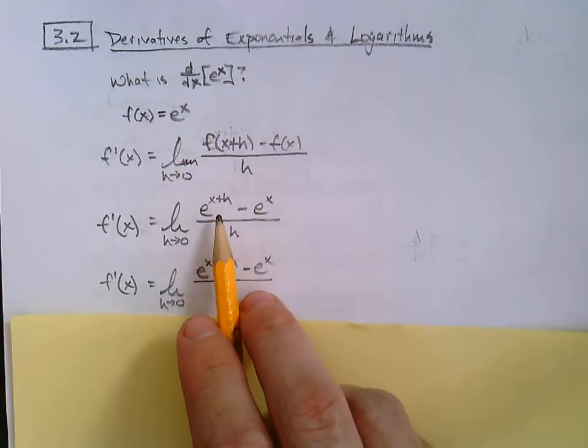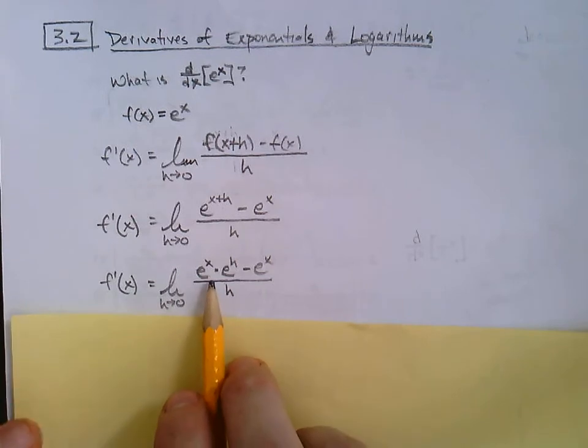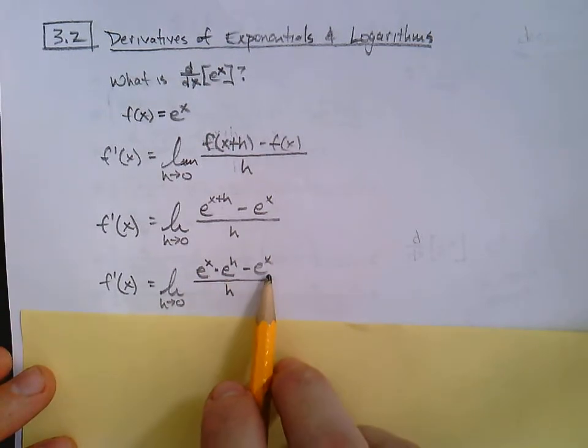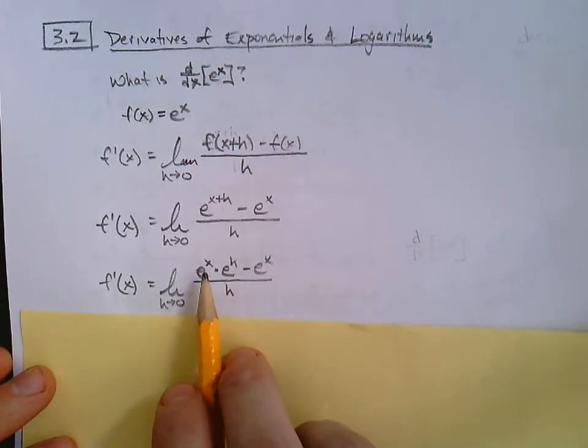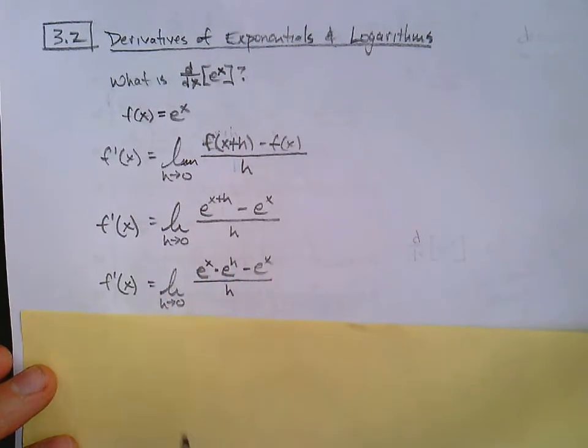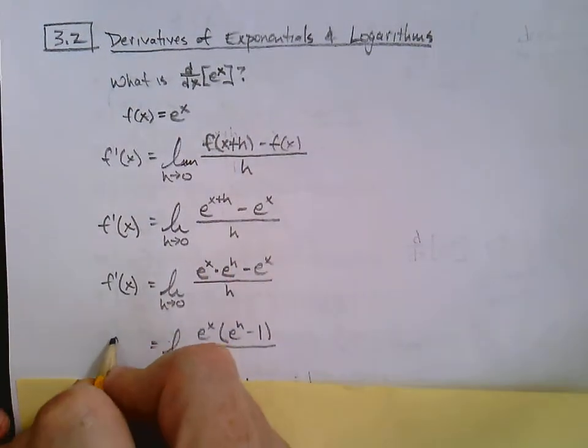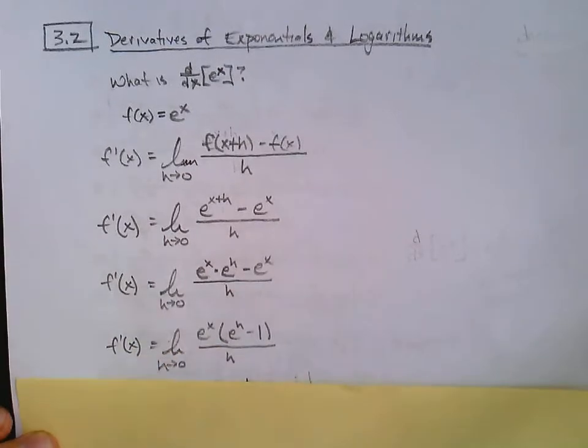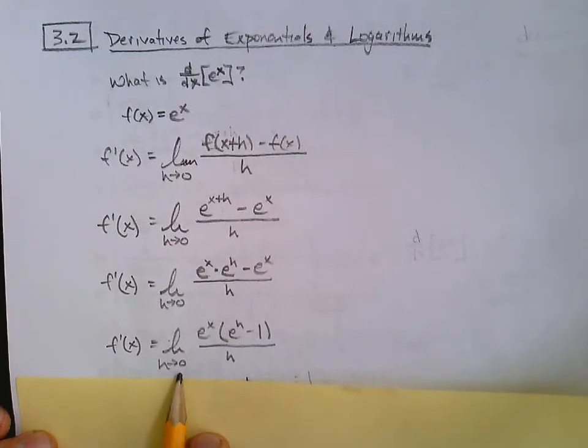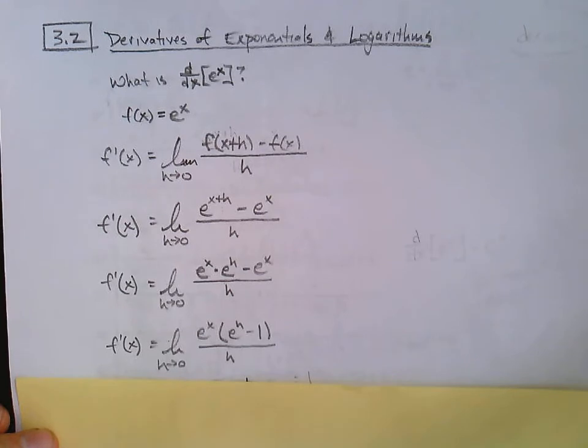So far, it's all equivalent. We're just rewriting. And now notice, hey, both terms here in this numerator have an e to the x. So we can factor that. So now f prime of x equals the limit as h approaches 0, e to the x times the quantity e to the h minus 1, all over h. We factored out the e to the x.